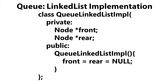You can see here that we've created a class called queue linked list implementation. We have two private data members: we have front, which is going to point to the front of the queue, and we have rear, which is going to point to the back of the queue. Coming down here, you can see that we have our no-argument constructor, and this is just going to initialize both front and rear to null, which symbolizes that our queue is empty.